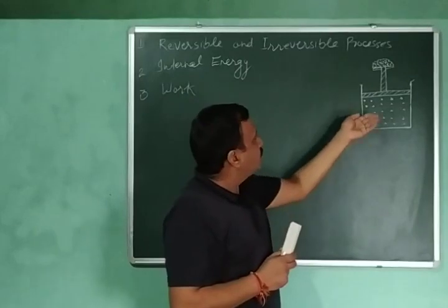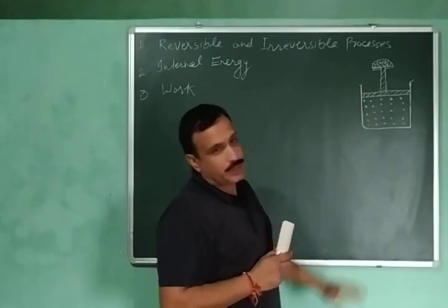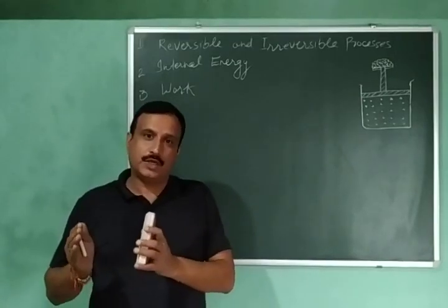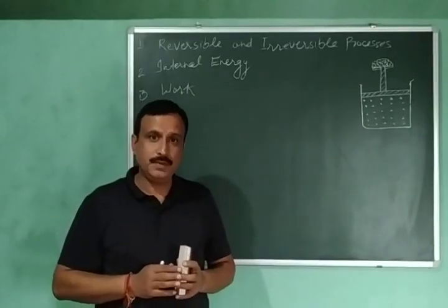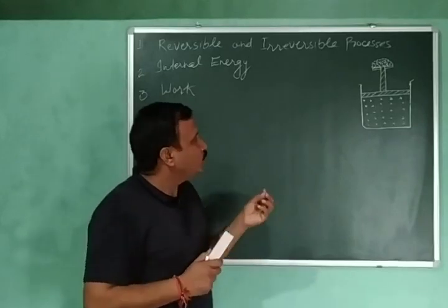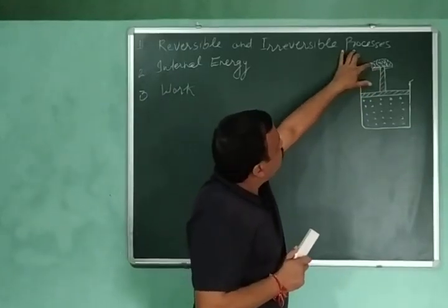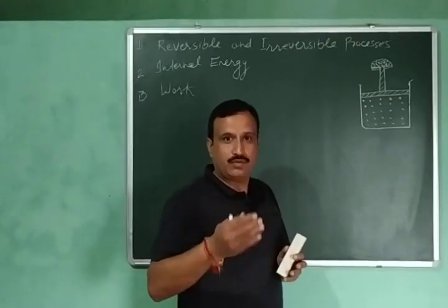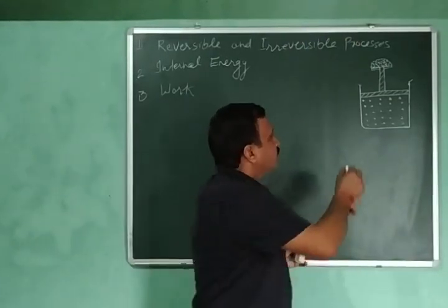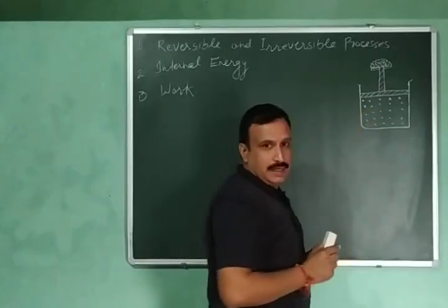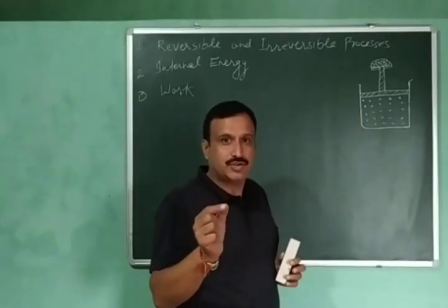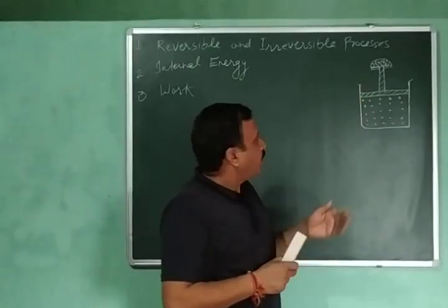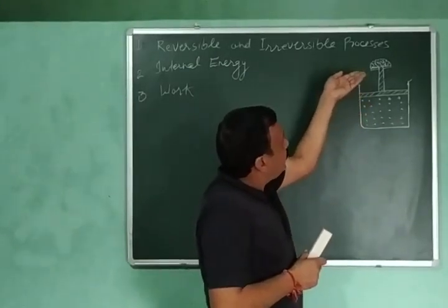The pressure exerted by the weight of the piston, sand, and atmospheric pressure are equal. This means that external pressure and internal pressure are both equal, and the system is in the state of equilibrium. Now, what I do — I remove a sand particle, and when I do this, the internal pressure of the gas will become slightly greater than the external pressure, and the gas will expand slightly.